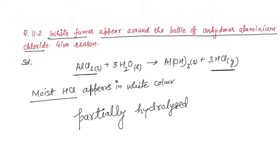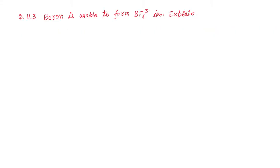Next question is: boron is unable to form BF6^3- ion. Explain. How do you explain?